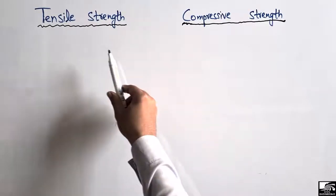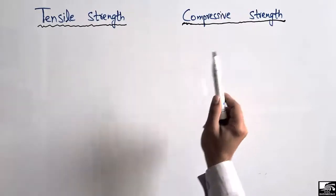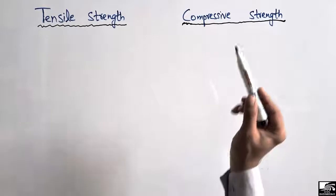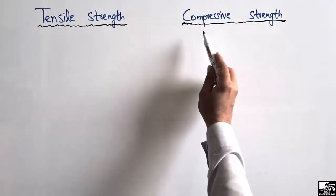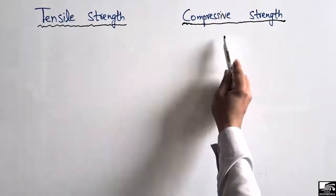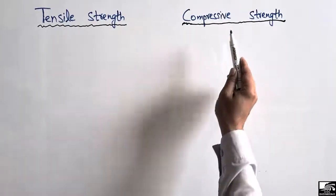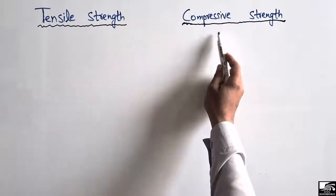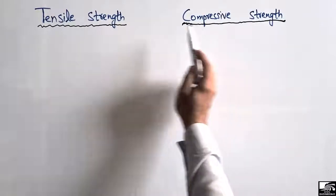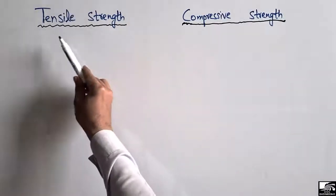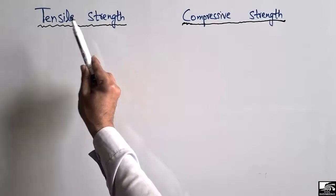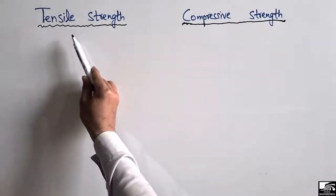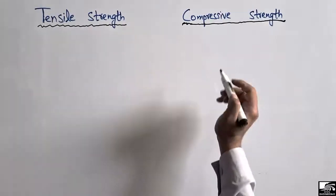Compressive strength can be defined as the strength developed inside a material due to the application of a compressive load. Tensile strength is the strength developed in a material due to the application of a tensile load.